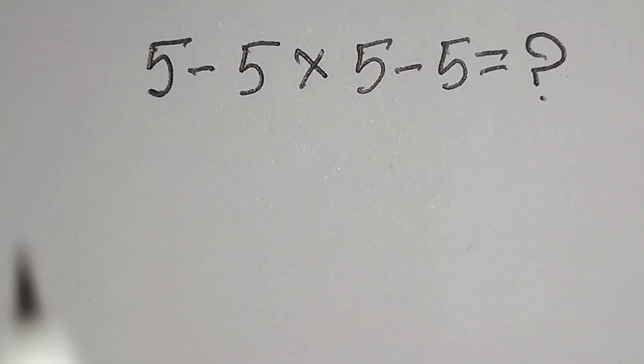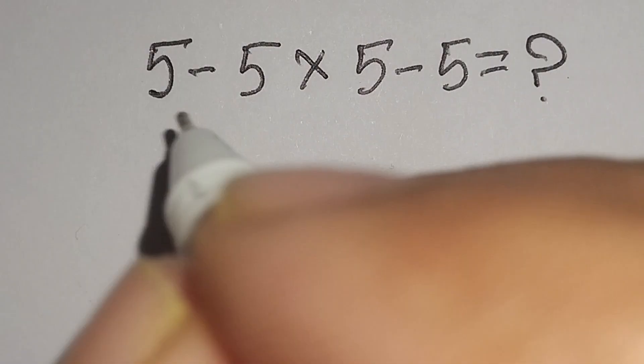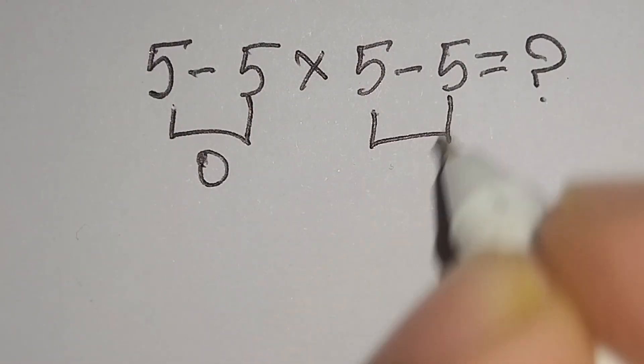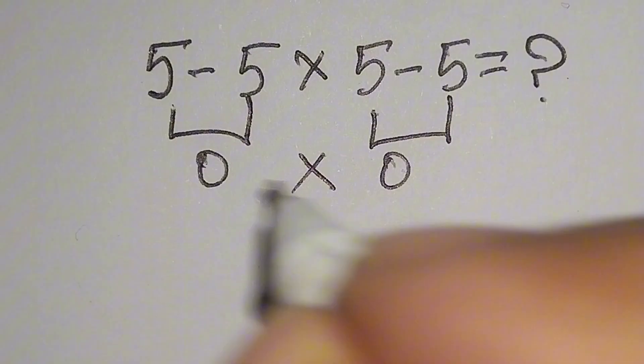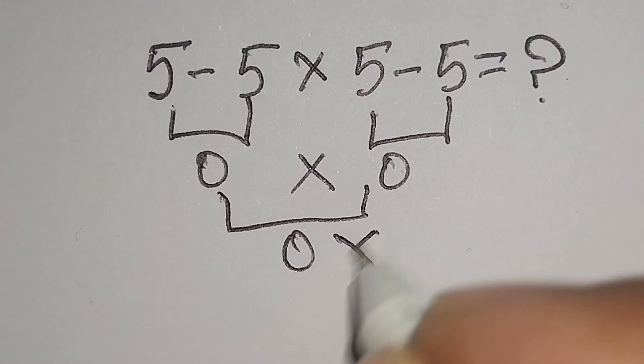Hi guys, this is a nice math problem: 5 minus 5 multiply 5 minus 5 equals what? Here 5 minus 5 gives us 0, 5 minus 5 gives us 0, 0 multiply 0 gives us 0, but it is not correct.